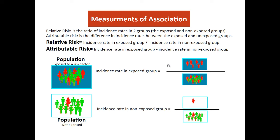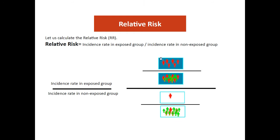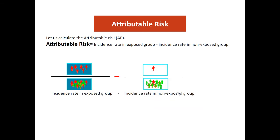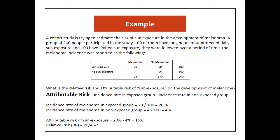The relative risk is the ratio between the incidence rate in the exposed group to the incidence rate in the non-exposed group. The attributable risk is the difference between the incidence rate in exposed and non-exposed groups.